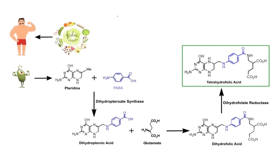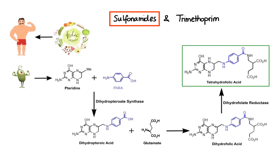Metabolic pathway inhibitors work by interfering with bacterial synthesis of tetrahydrofolic acid. They include a family of drugs called sulfonamides, or sulfa drugs, and a drug called trimethoprim. Sulfonamides act through competitive inhibition of dihydropteroate synthase due to their structural resemblance to para-aminobenzoic acid. The enzyme that normally converts PABA to the precursor of folic acid combines with the sulfonamide instead, preventing tetrahydrofolic acid synthesis and thereby stopping bacterial growth. Examples of sulfonamide antibiotics include sulfamethoxazole and sulfacetamide.